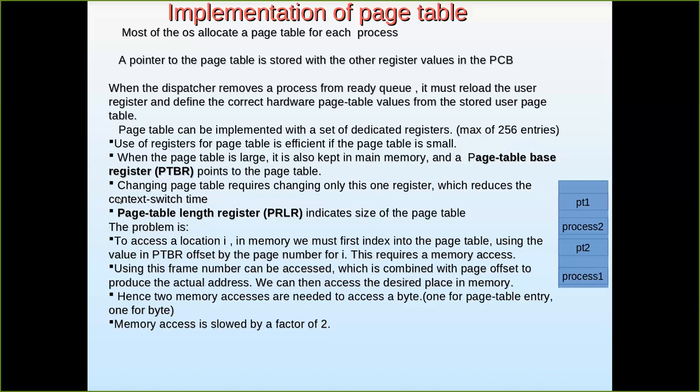If it is more than that, the page table entries exceed the number of registers available, and even if registers are available they could be used for some other purpose. So if the page table has more than 256 entries — for example, a user process requires a thousand pages — then the thousand respective frame numbers also have to be stored. With only 256 registers, it cannot be implemented, so naturally it has to be stored in the main memory.